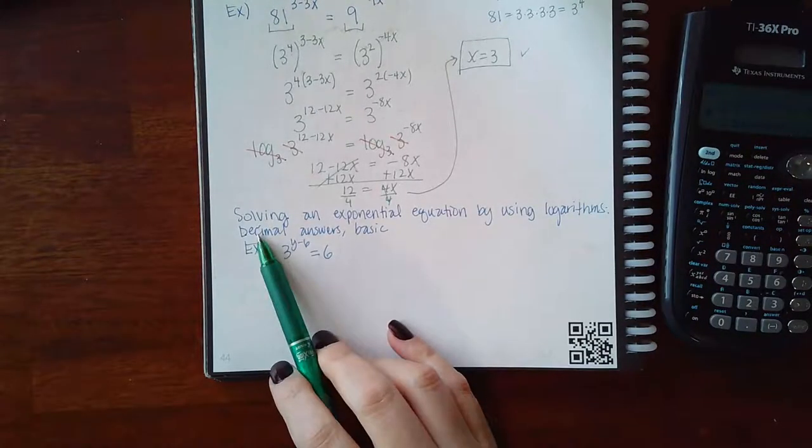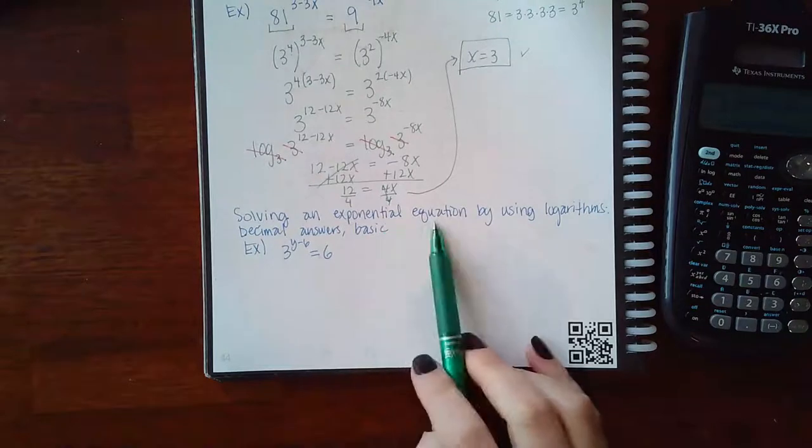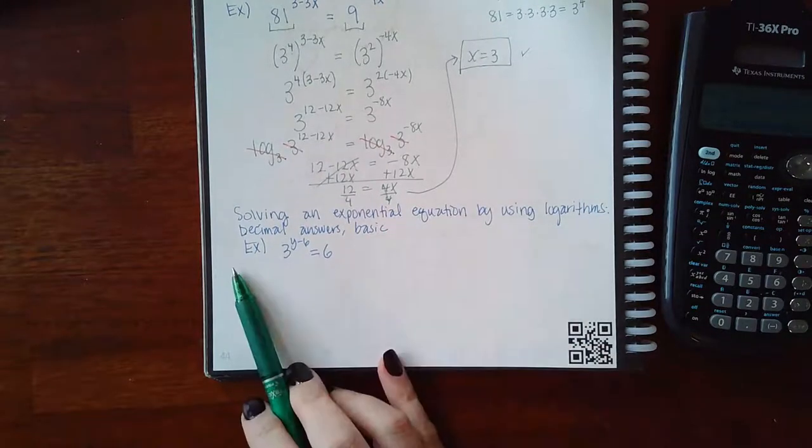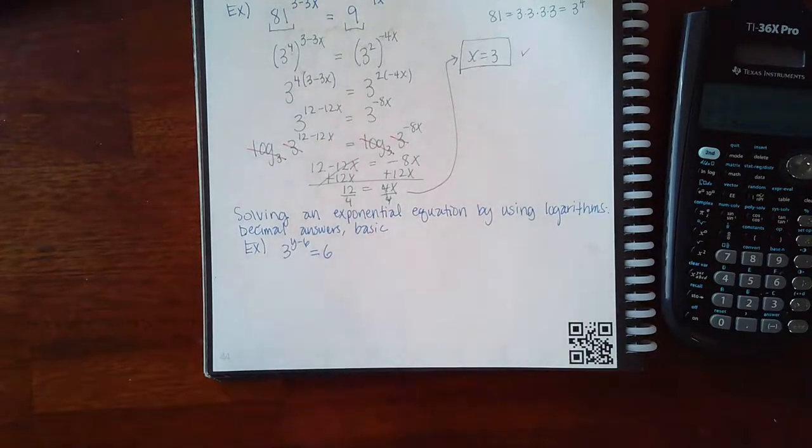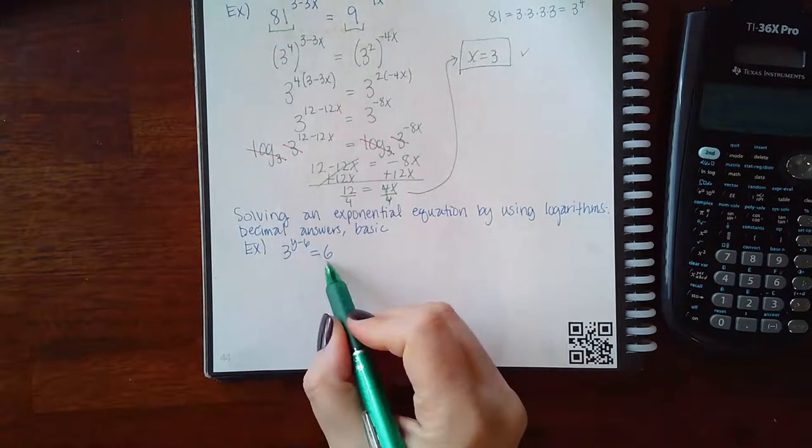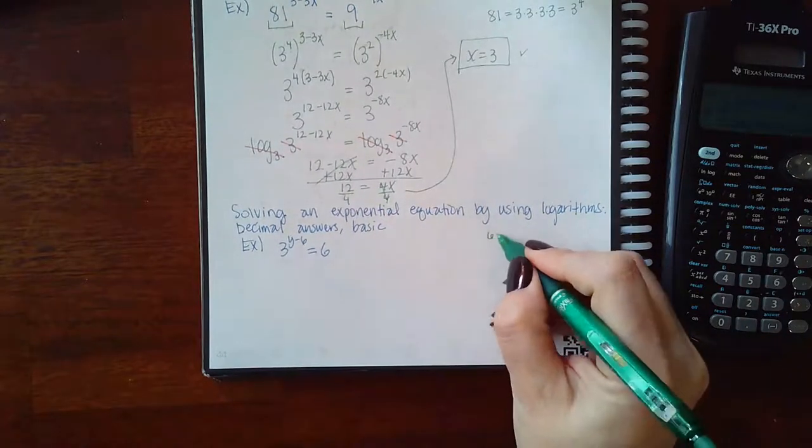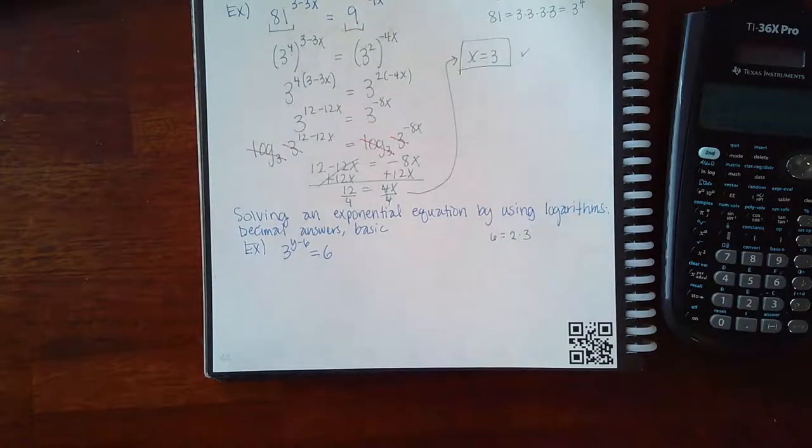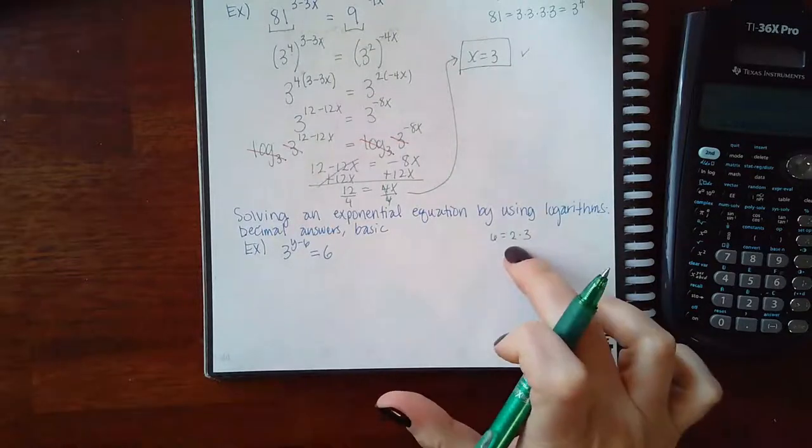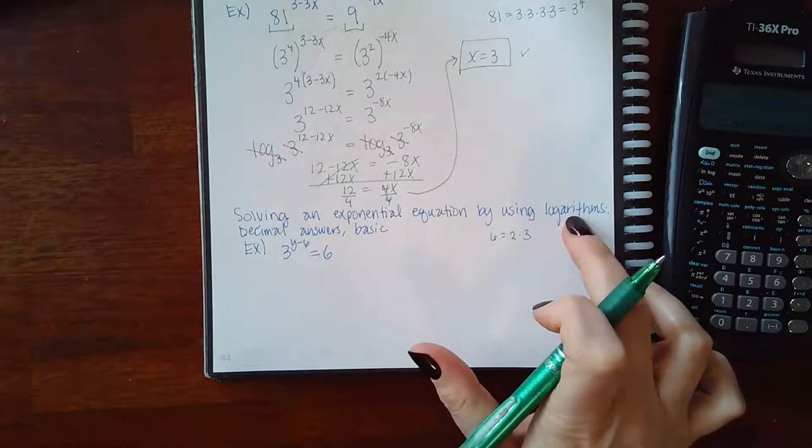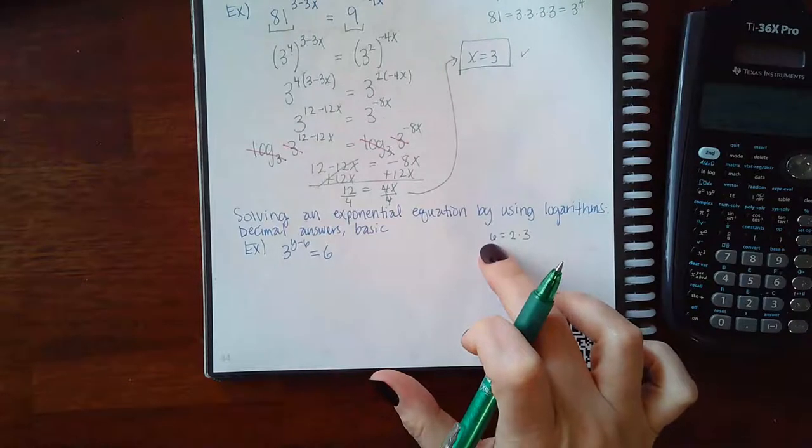Now we're down to solving an exponential equation using logarithms. So here, unfortunately, 6 cannot be written with a common base like 3. Because 2 and 3 are different. If they're different, then you can't write them as an exponential. It's going to stay stuck as a 3.